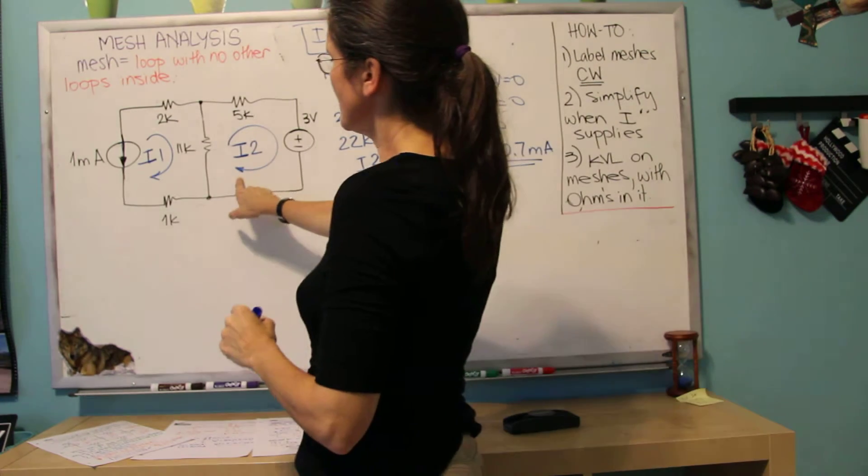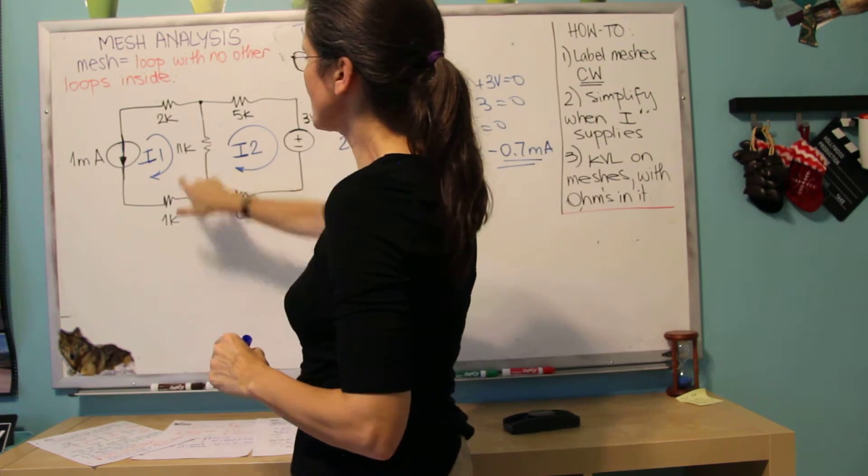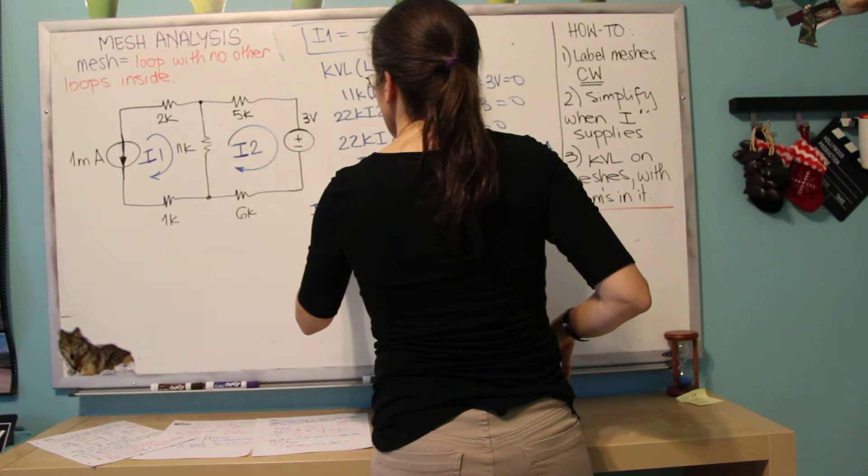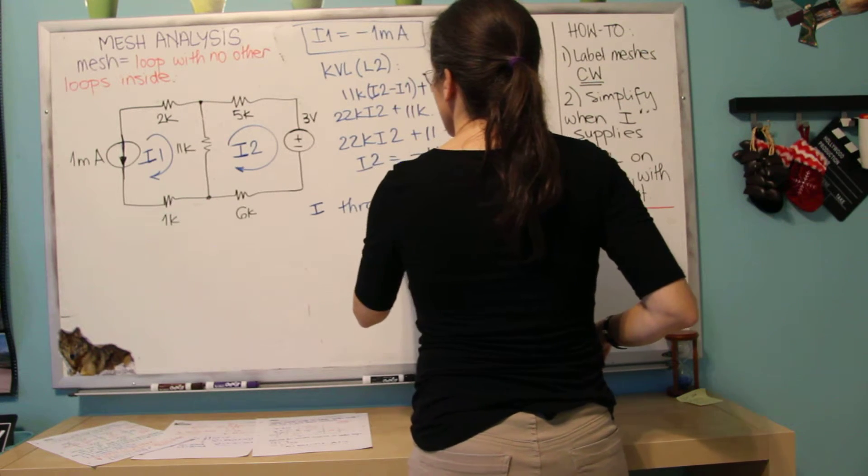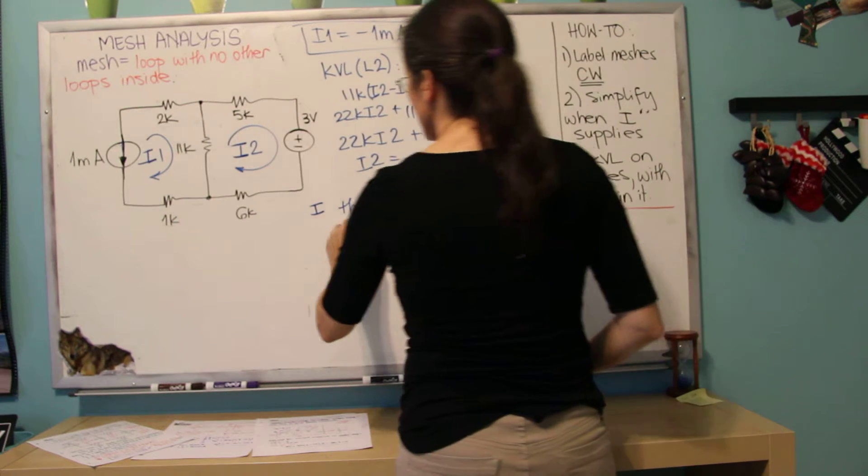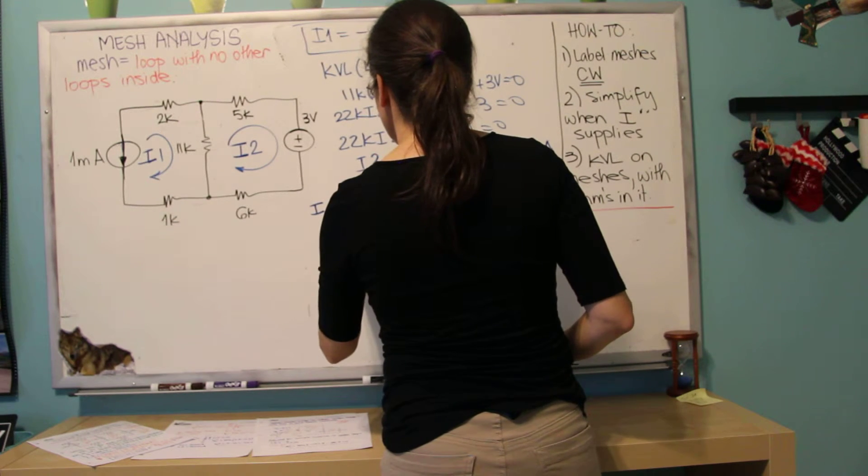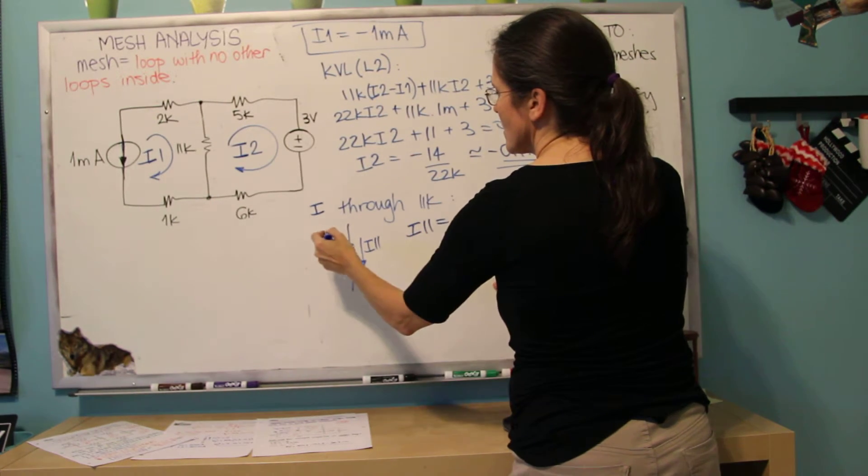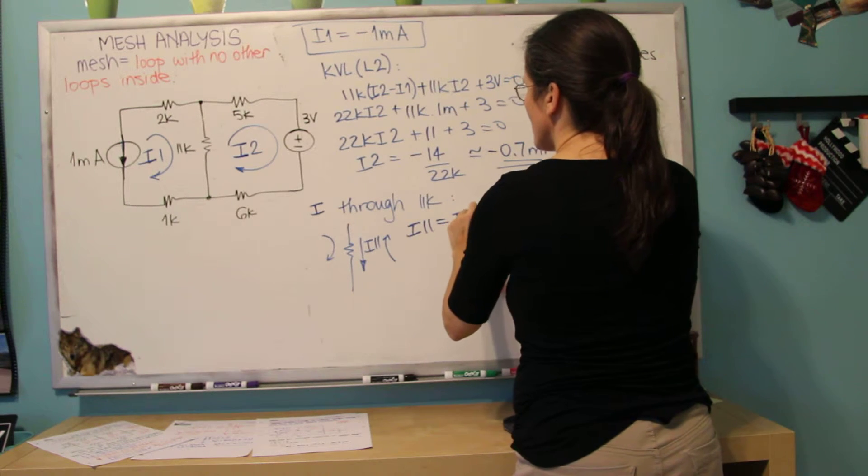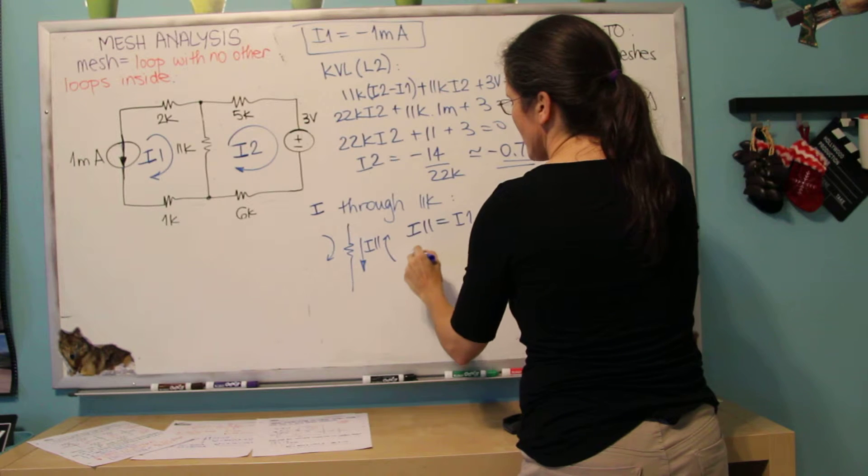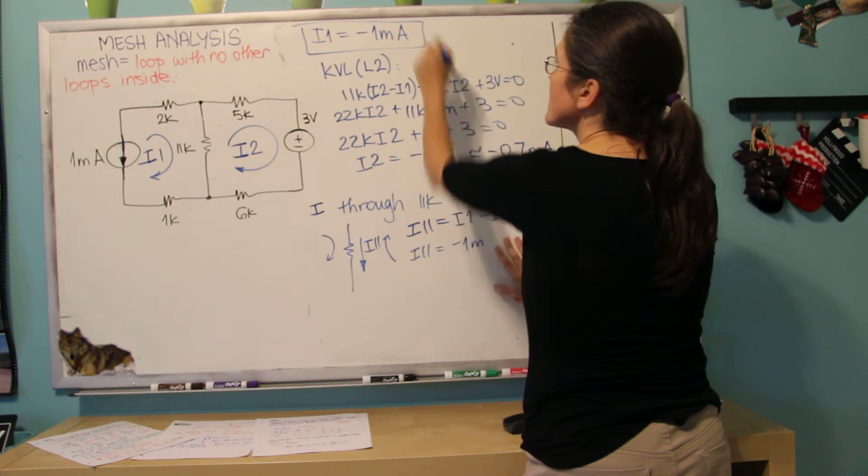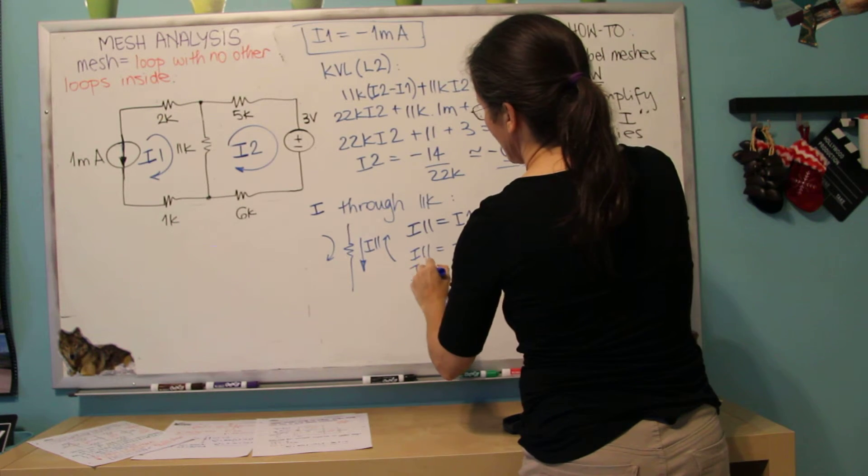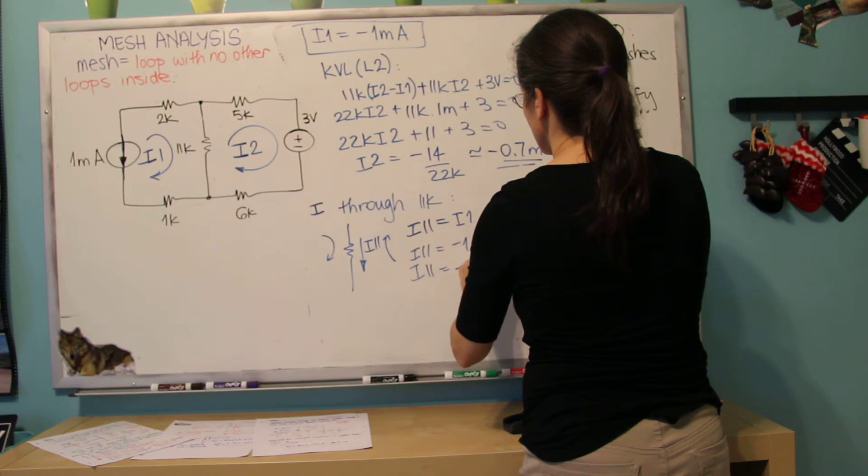This is this current here, and I already know that this is minus 1. So now let's find the current through the 11k. I'm going to assume that current is going down, for example. So I11 equals I1 minus I2, so I11 equals minus 1 milliamp, which is this, minus minus 0.7 milliamp. So I11 equals minus 0.3 milliamps.